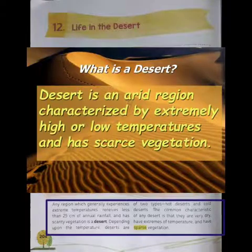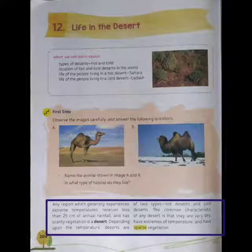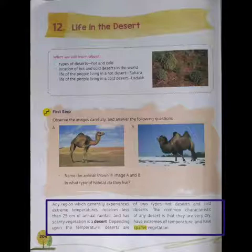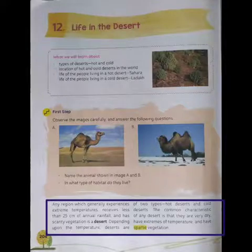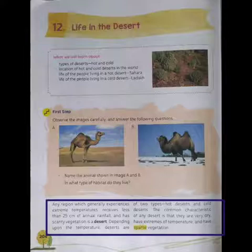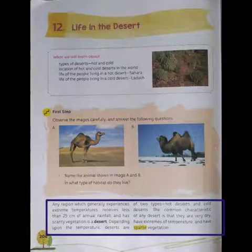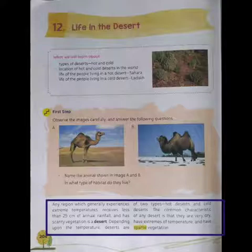What is desert? Desert is a region which has three characteristics: it should have extreme temperature, annual rainfall should be less than 25 cm, and it should have scanty vegetation. On the basis of temperature, there are two types of deserts — hot desert and cold deserts. The deserts are very dry and have extreme temperature with sparse vegetation.